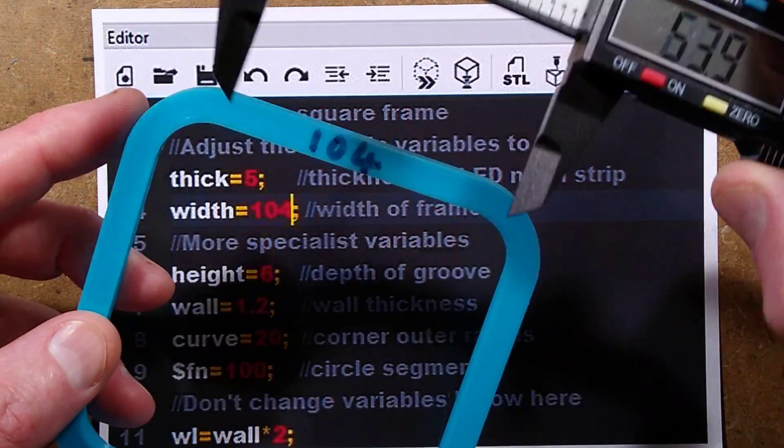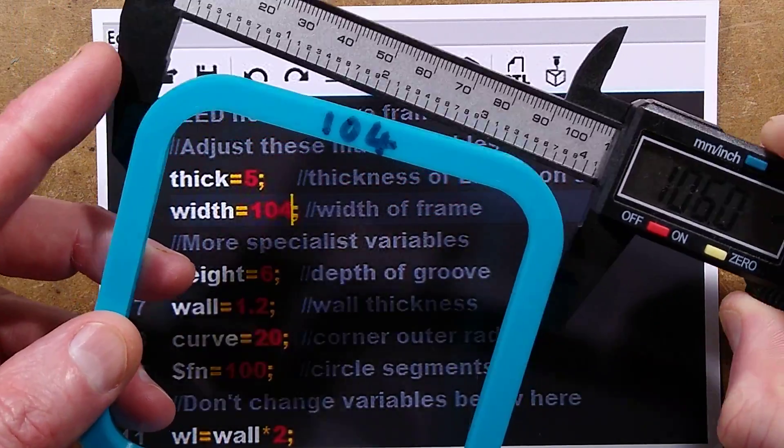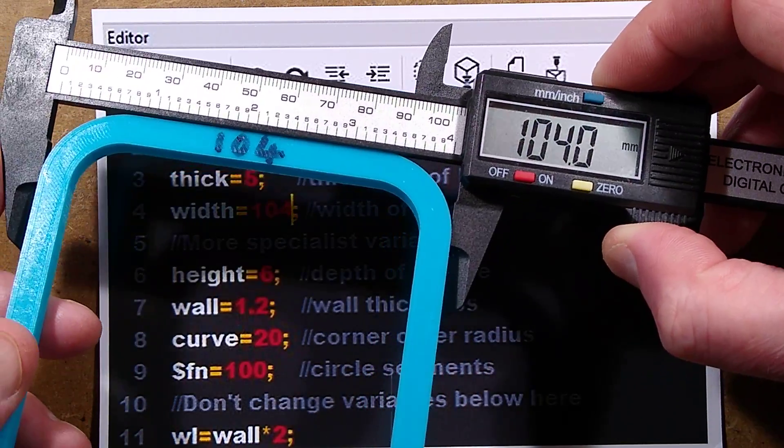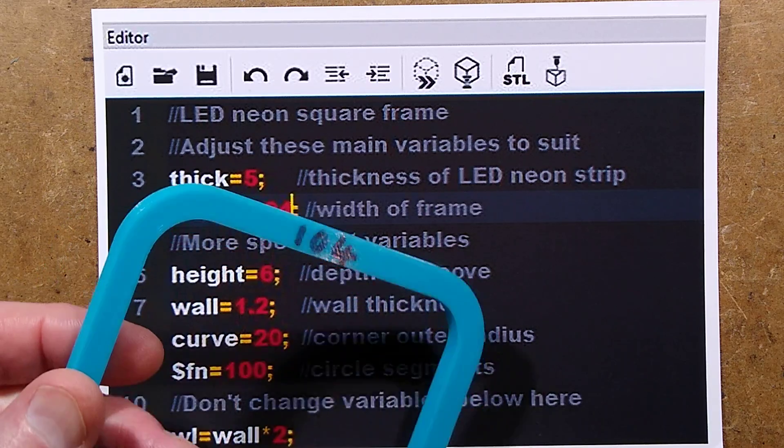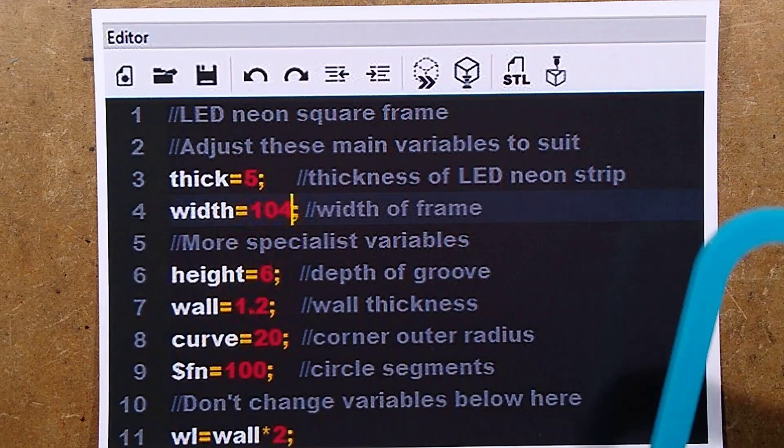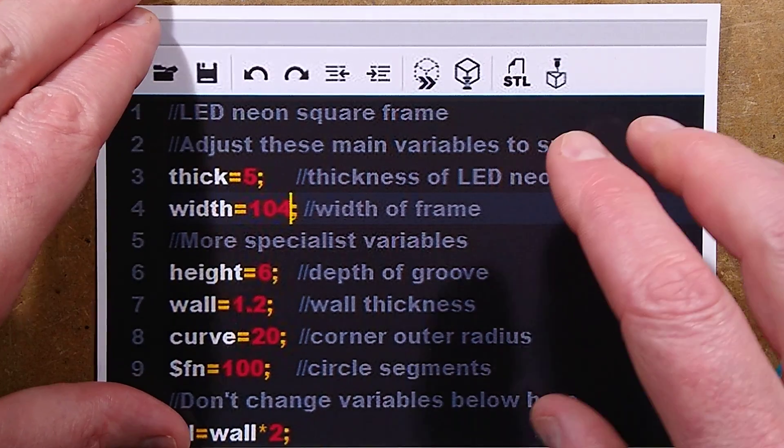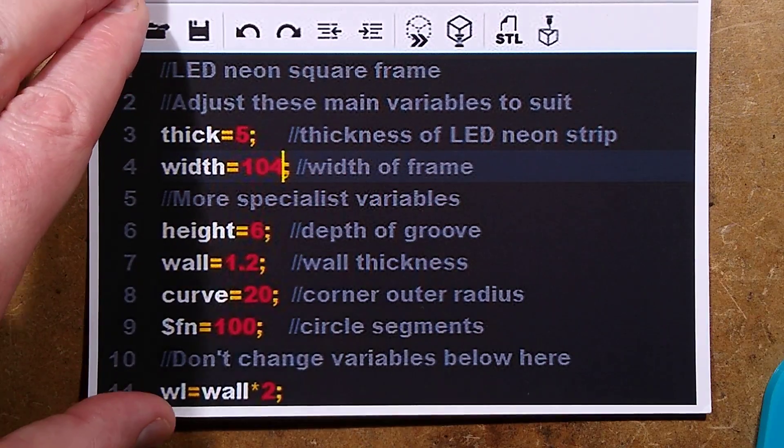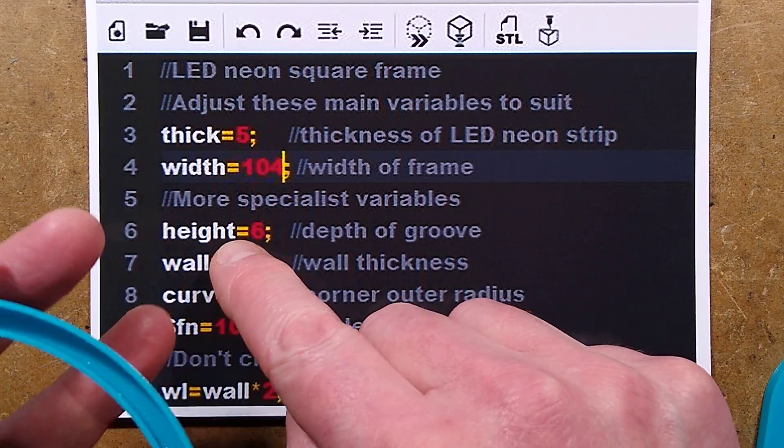The width, in the case of this one, it's the square frame. The width is the actual size from the outside of this. Let me get the calipers again and show you, so roughly 104mm. Initially when you've printed your frame off, just put that out of the way.